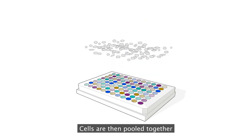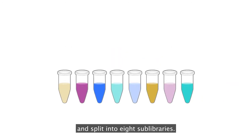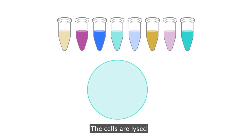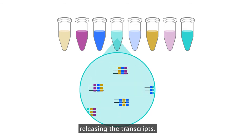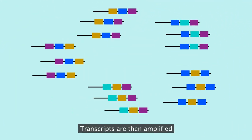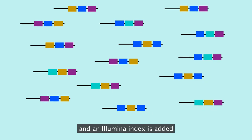The split pool ligation process is repeated. Cells are then pooled together and split into 8 sub-libraries. The cells are lysed, releasing the transcripts. Transcripts are then amplified and an Illumina index is added as a fourth and final barcode.